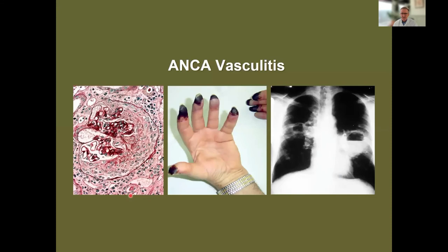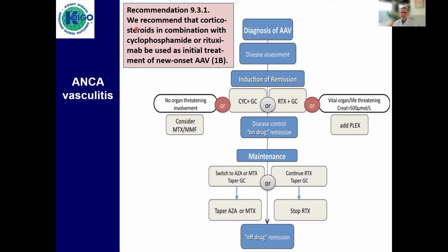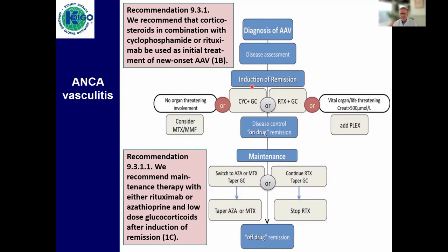If there is no nephrotic syndrome but only nephrotic-range proteinuria, or if there is absence of nephrotic proteinuria, we suggest evaluating for secondary or genetic forms of FSGS, and only if they develop nephrotic syndrome then consider immunosuppression. For ANCA vasculitis, the scheme most of us would follow is: make the diagnosis, assess disease, induce remission, control the disease on drug, switch to maintenance, and then at some point consider stopping maintenance. We recommend that corticosteroids in combination with cyclophosphamide or rituximab be used as initial treatment to induce remission — a 1B strong recommendation.